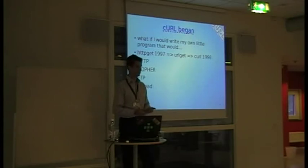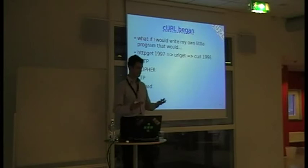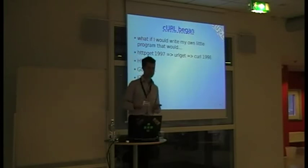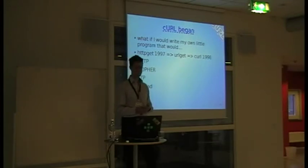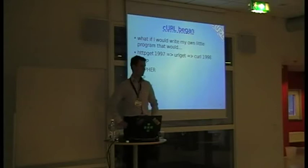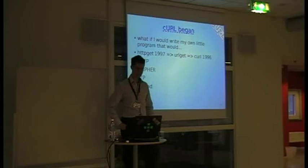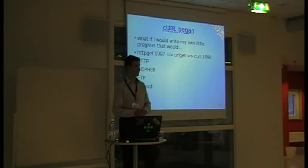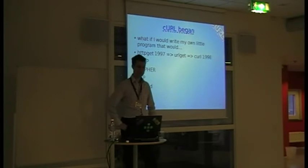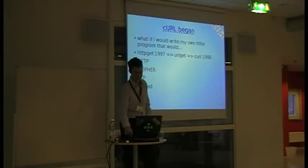HTTP GET was a stupid name when it didn't only work with HTTP. And URL GET was a stupid name when it no longer only got data but also sent data. So I had to change the name again, and I changed it to curl in 1998, already at version 4. So it was cURL 4 in 1998. By then it did HTTP GET and HTTP upload. I actually based the first version on existing code I found - the first version did only HTTP GET and that was a very small amount of code. That original code was written by a Brazilian guy and it's not around in the code anymore.